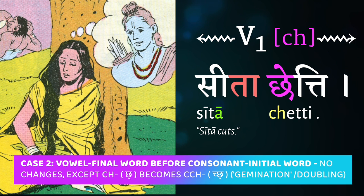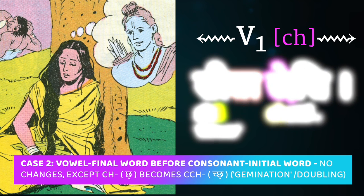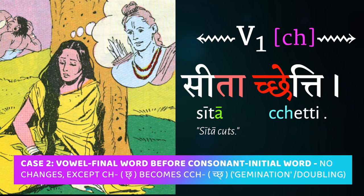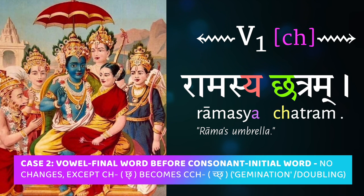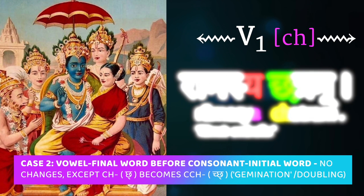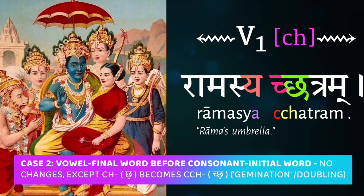There's one exception: if the second word starts with the cha-kara, the palatal unvoiced aspirate, then there's a kind of gemination where the cha turns into a cluster — a half cha-kara is attached to the cha. The two words are still written separately, but with a half cha added to the cha. For example, rāmasya chatraṃ, meaning Rama's umbrella, becomes rāmasya cchatraṃ.